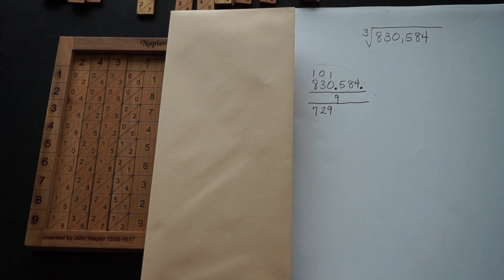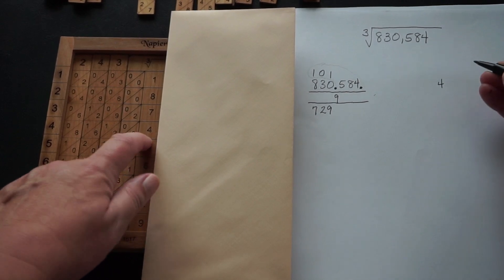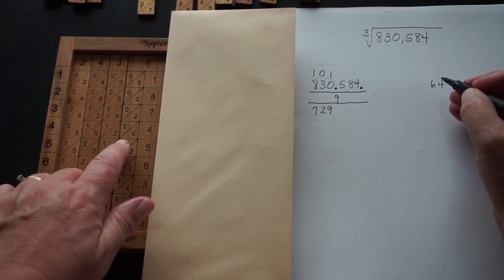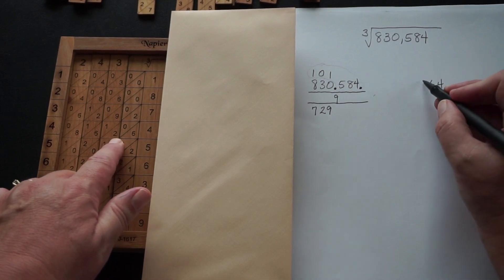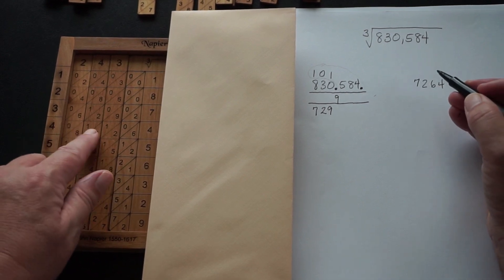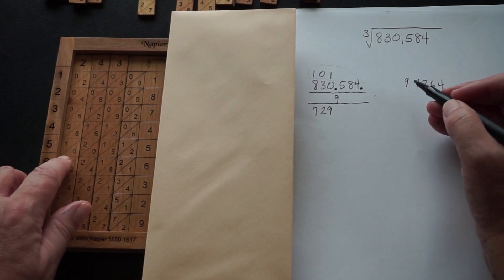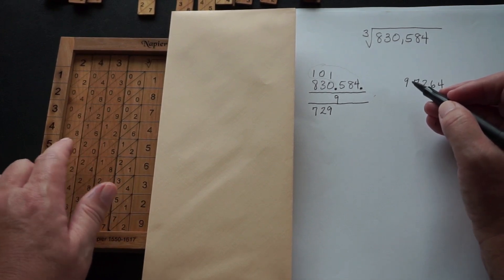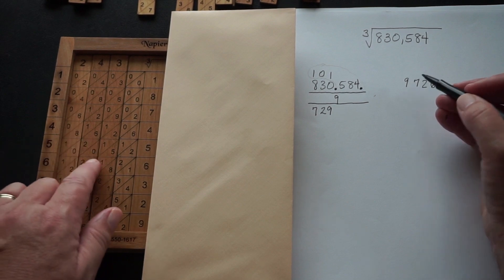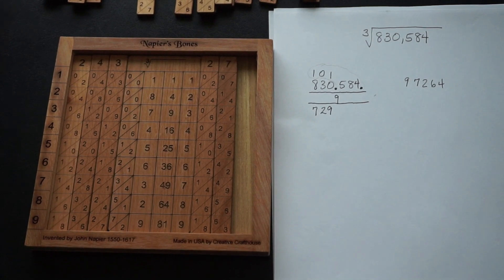In finding the number closest to 101,584 without going over, we're going to be using just these columns. That can be found in row 4, where we have in the ones place a 4, in the tens place a 6, hundreds place is going to be a 2, thousands place is going to be a 7, and the ten-thousands place is going to be a 9. If I took this one further, I would have 120,000, which is larger than my 101,584.